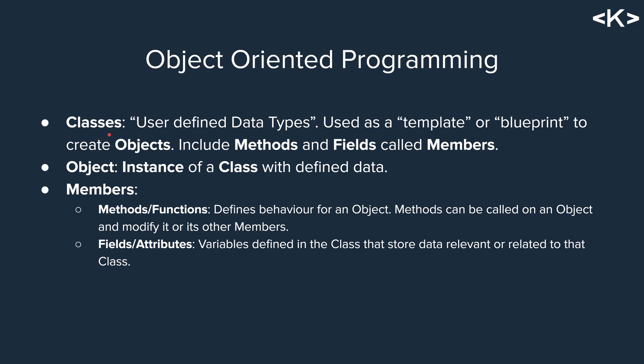A class is more or less what you can think of as a user-defined data type — some pretty cool stuff. Classes are used as a template or blueprint to create objects. So a class basically tells you what a thing needs — for example, a person could have an age, a name, and an address. When you create that as an object, that is now an instance of the person class, which represents an actual person.